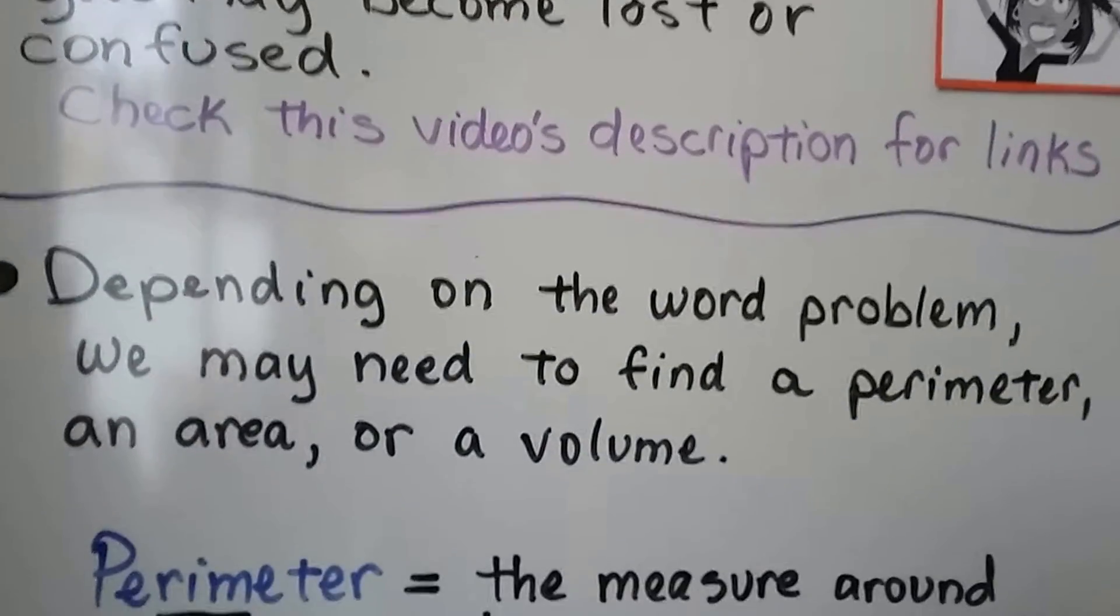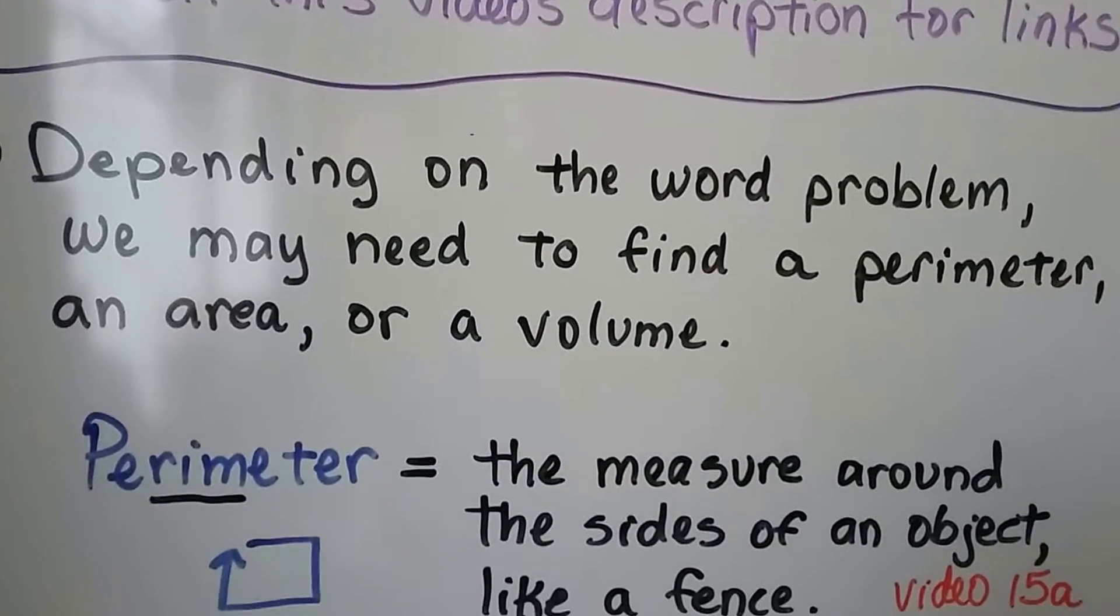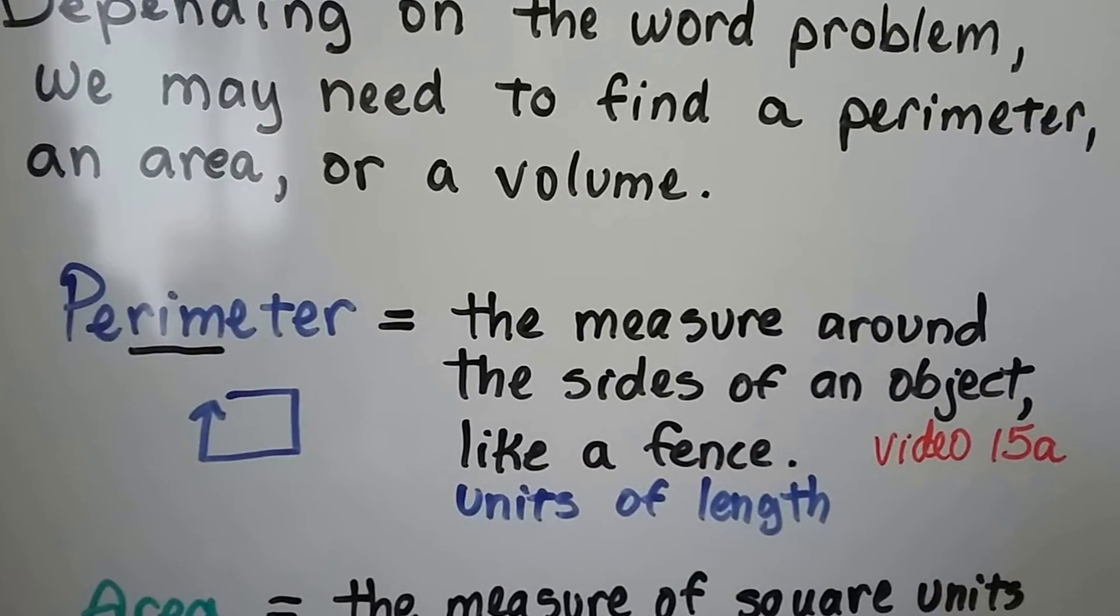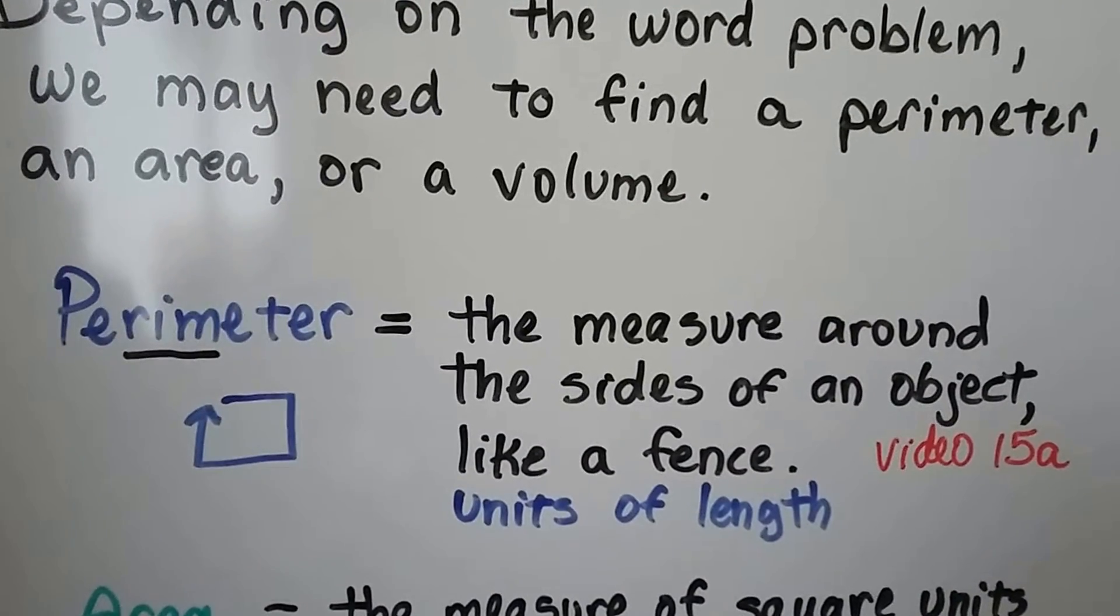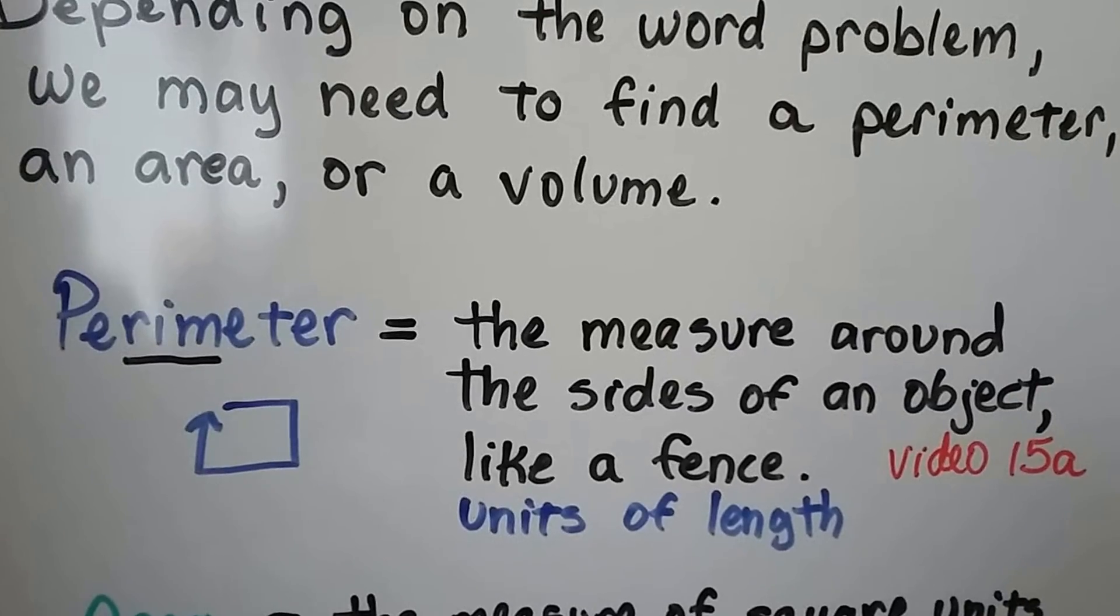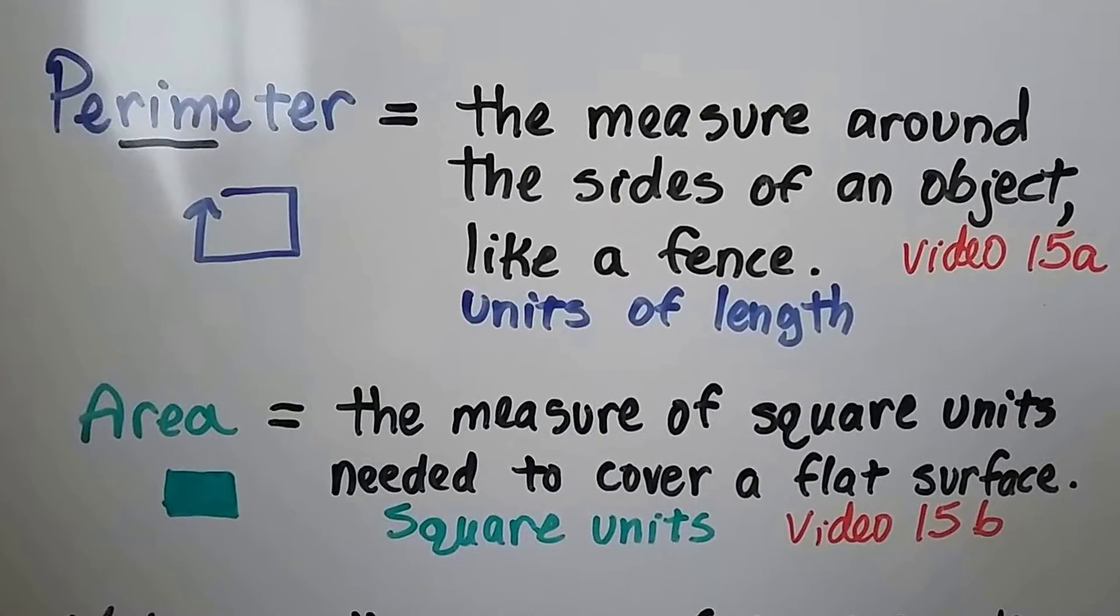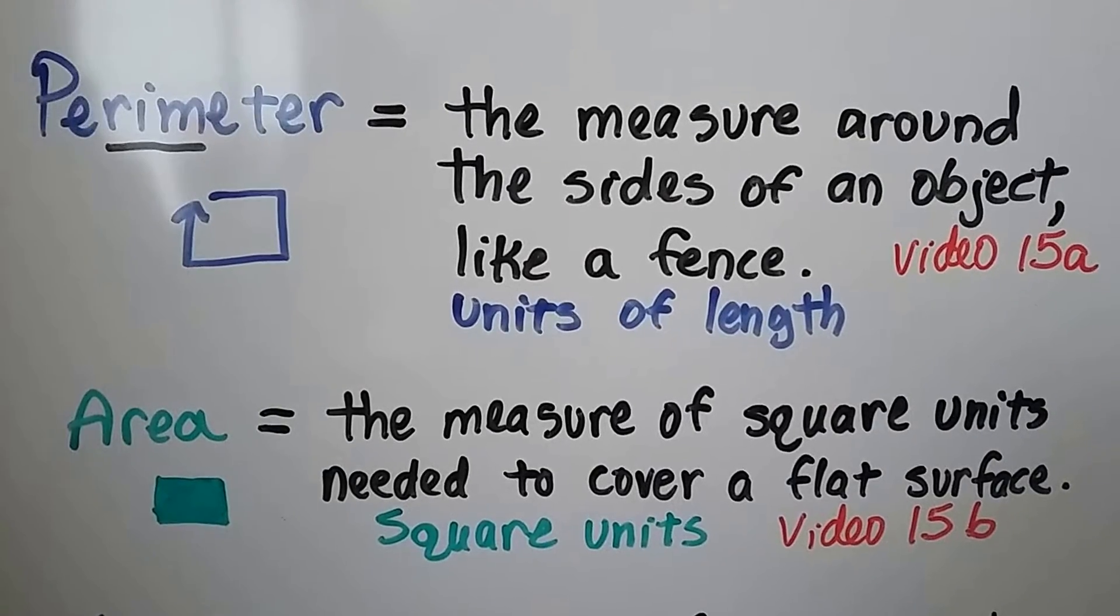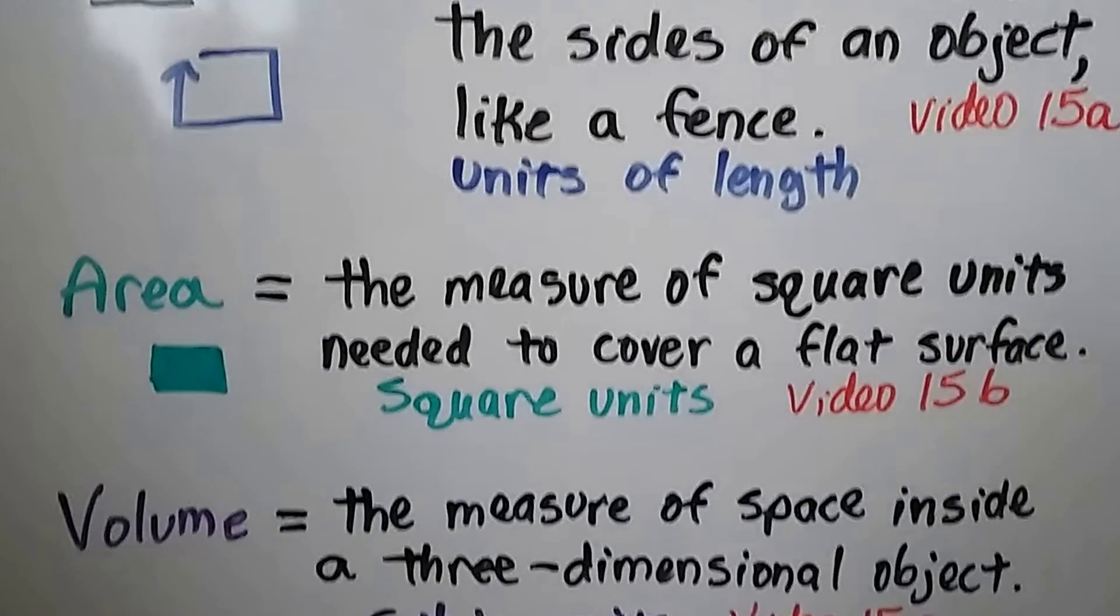Depending on the word problem, we may need to find the perimeter, an area, or a volume. We did perimeter in video 15A. It's the measure around the sides of an object, like a fence. It's units of length. We did area in video 15B. It's the measure of square units needed to cover a flat surface. It's measured in square units.